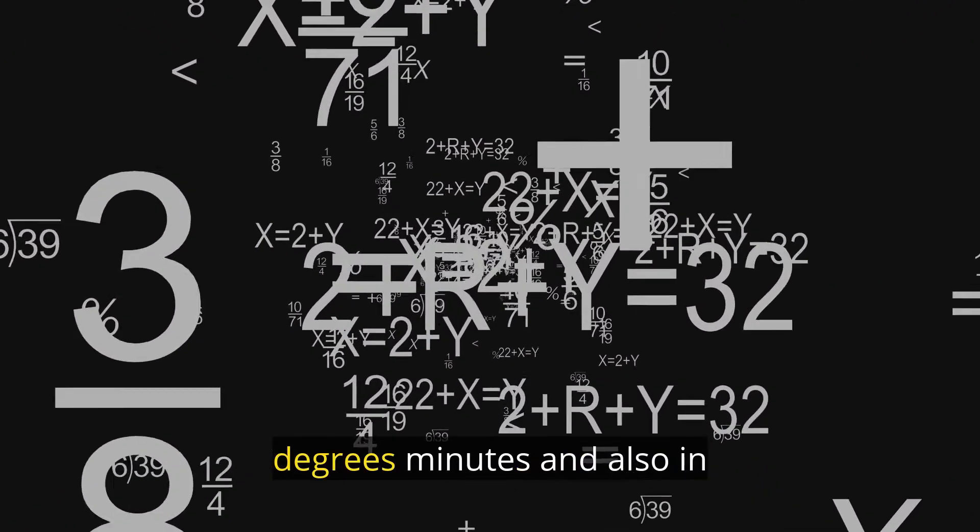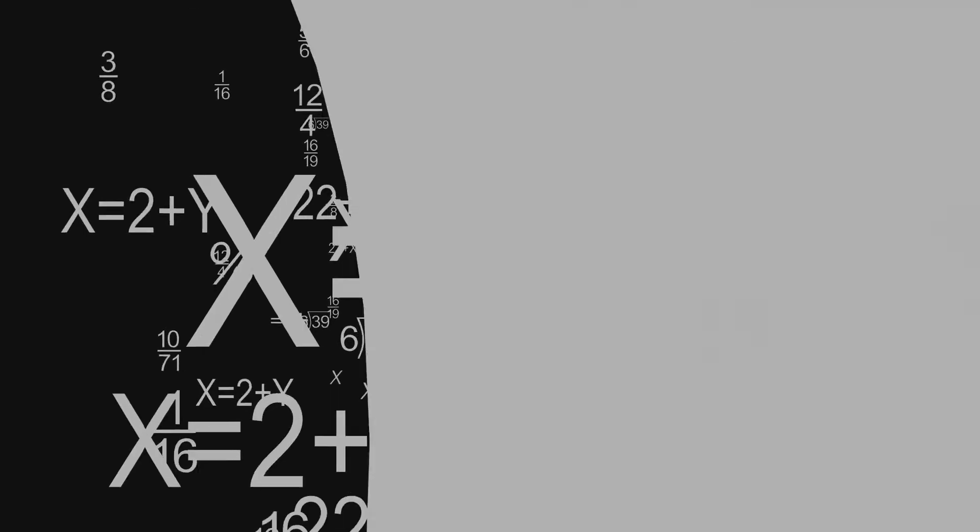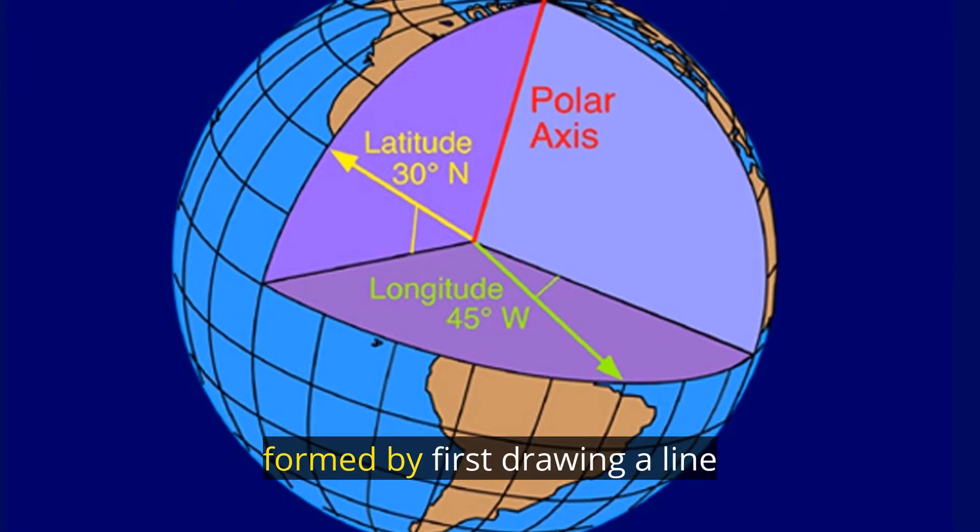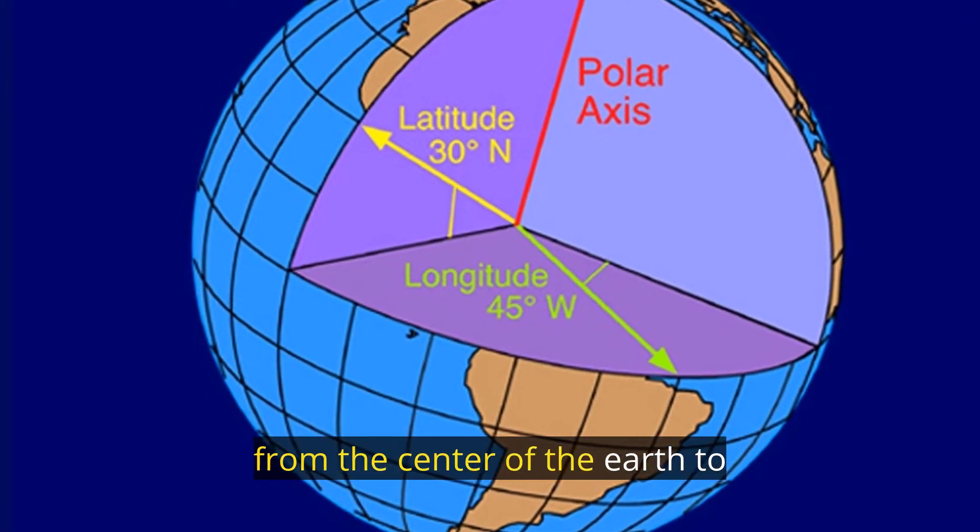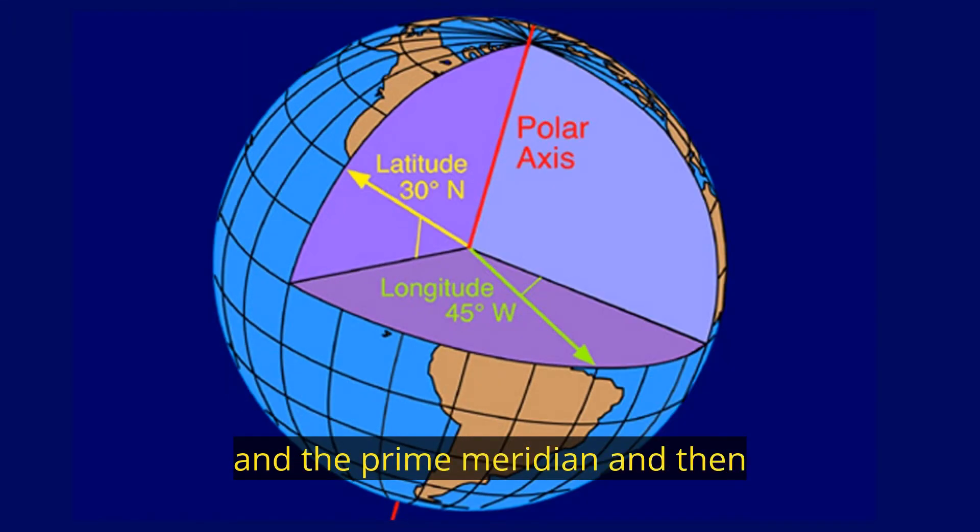Longitude is always measured in degrees, minutes, and also in seconds. Longitude is the amount of arc formed by first drawing a line from the center of the earth to the junction of the equator and the Prime Meridian, and then another line from the center of the earth to some other point on the equator.